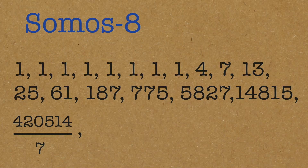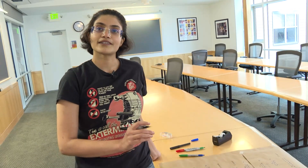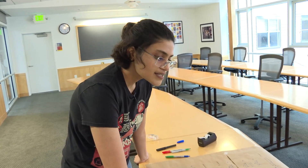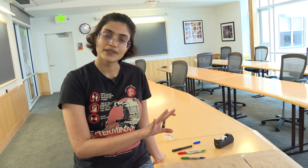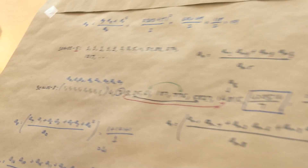Then you get 2867077 divided by 91 — another fraction, not an integer. And this goes on; you get quite a lot of fractions. Up to the first 30 digits or so, you never get an integer again. So this is where it breaks.